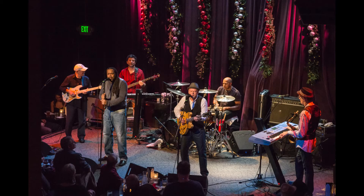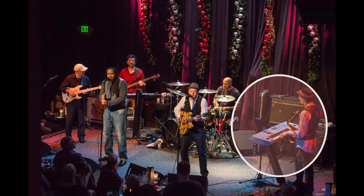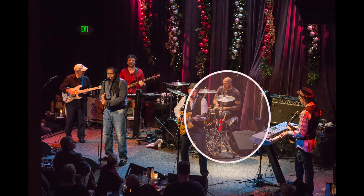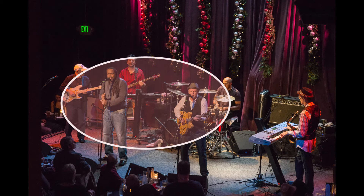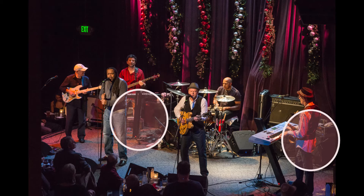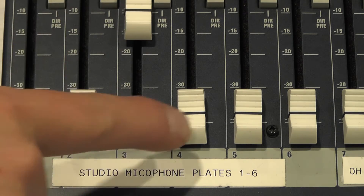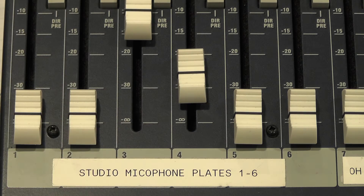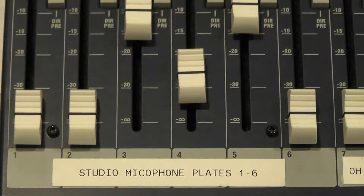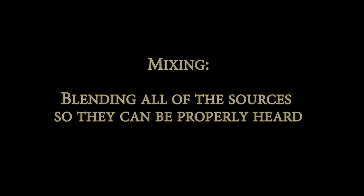For example, a music group that is recording a song will use a keyboard connected to the mixer on one channel, microphones for the drums connected through microphone jacks, vocals through microphones, maybe even a computer for other sounds. Each channel is individually set so all of the sources are blended in a way that they can all be heard. This is called mixing.